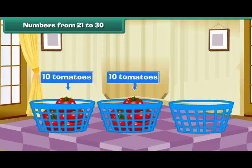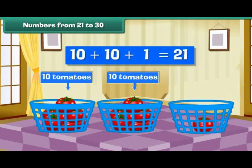Here is an empty basket. Let us place a tomato inside it. We have two tens and one. That is 21 tomatoes.